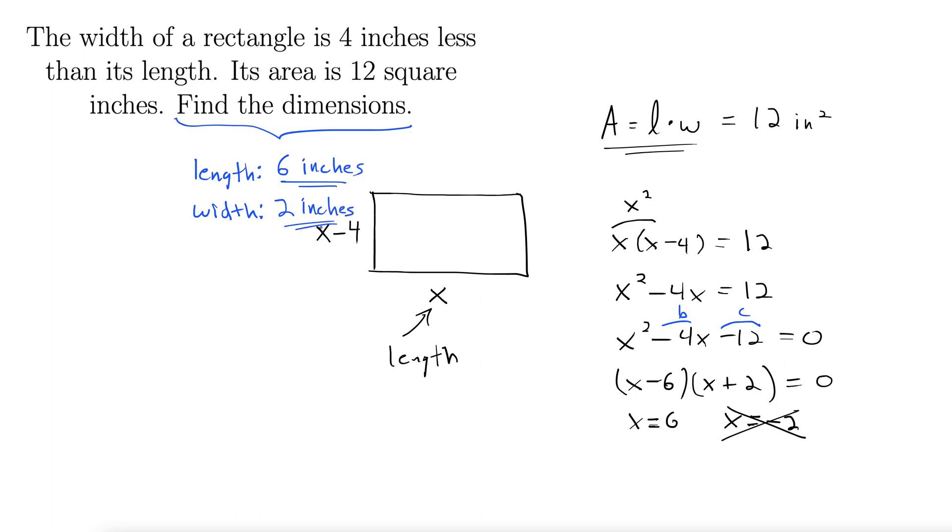There we go. That's from 6 minus 4 equals 2. And there we have it. Don't be intimidated by word problems. Draw a picture and work off the picture. Take your time with it. They're not as bad as they seem.